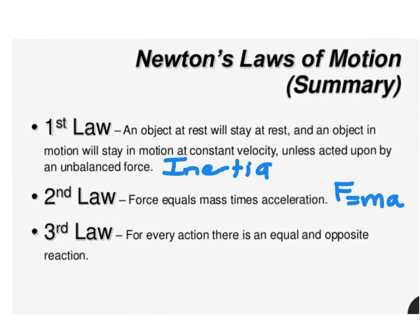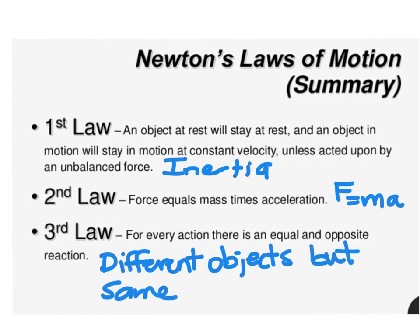And the third law, which says that all forces come in pairs, so for every action there's an equal and opposite reaction. And remember, force pairs act on different objects. So we're going to write different objects. But they are the same force. So the action force is the Earth pulls on you. The reaction force is you pull on the Earth. So the Earth and you are different objects, but the force is the same. It's gravity in both cases. Okay, see you guys in class.